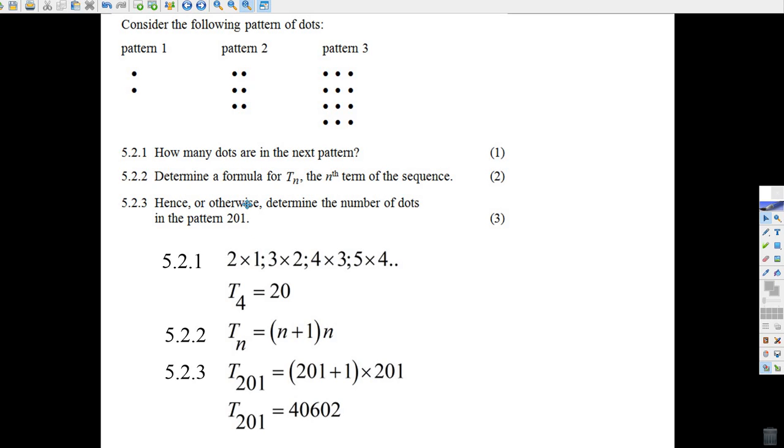Then it says, hence or otherwise, how many dots would be in the 201st pattern? Well, if you got this and you see, it must be 201 times 202, which is 40,602. And that's it. This one's easy if you see the pattern and pretty hard if you don't. It's easy to miss it. But there you go. That's how it works.